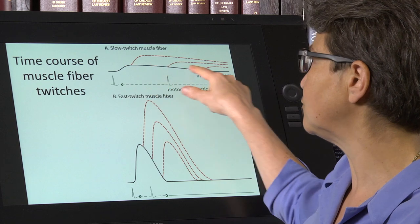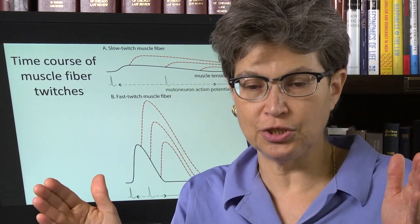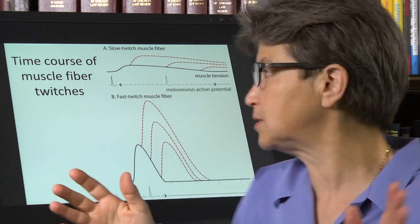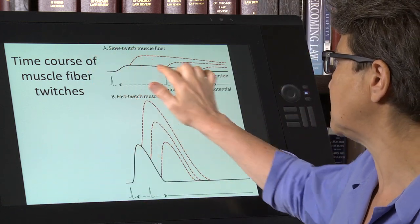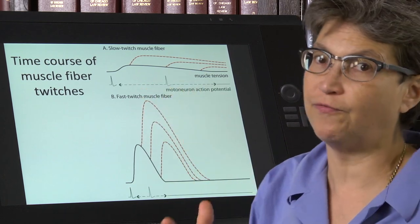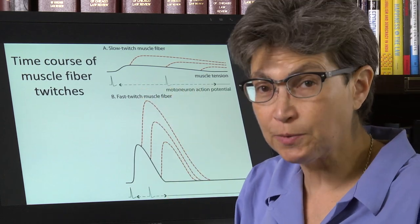In the case of slow twitch muscle fibers, the change can last for 100 milliseconds. The rise time can be 100 milliseconds. So this can be 100 milliseconds, this can last for a long time, whereas this rise time can be on the order of five milliseconds. So it's much, much shorter.